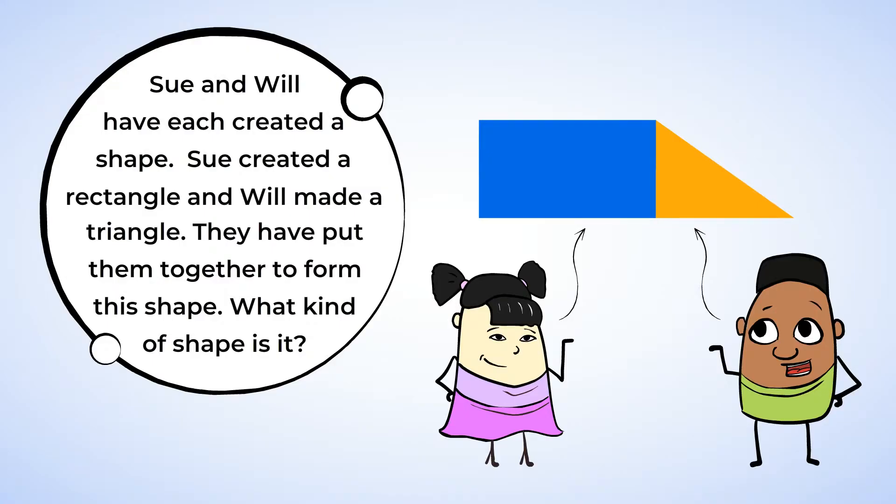Let's start by looking at the sides. The shape has one set of parallel sides, the top and the bottom. We know that the left side is perpendicular to the top and bottom, making right angles, since it was part of the rectangle that Sue created. That left side and the right side of this shape are not parallel. Since it has only one set of parallel sides, we know that it is a trapezoid.